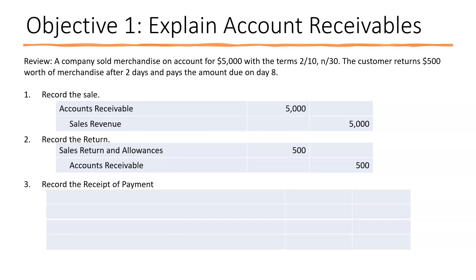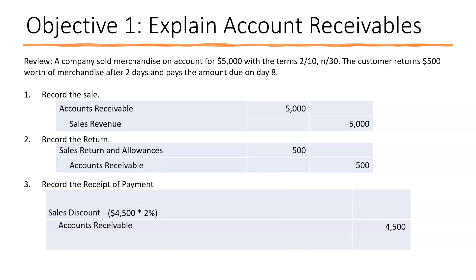To record the receipt of payment, paid on day eight which is within the 10-day discount window. We credit accounts receivable for the full amount due of $4,500 — the original $5,000 minus the $500 return. We debit sales discount of 2% of $4,500, which is $90. The cash received is the difference: $4,410.